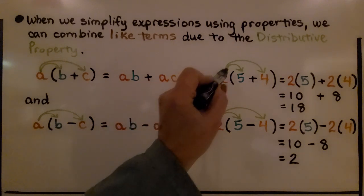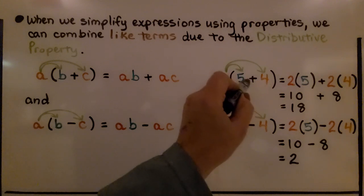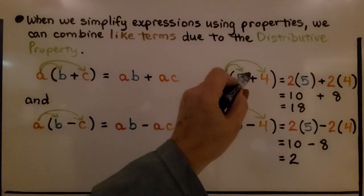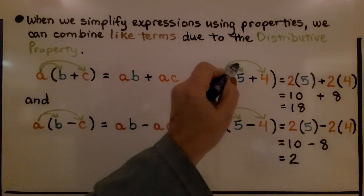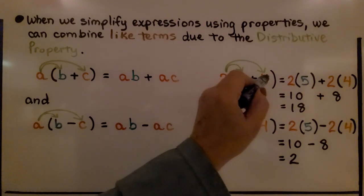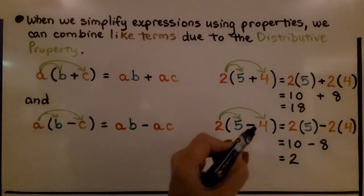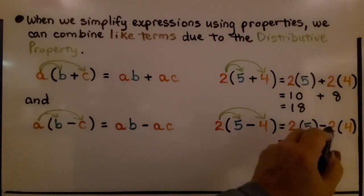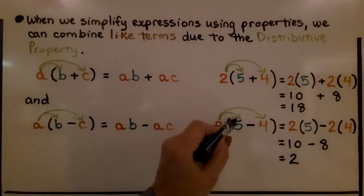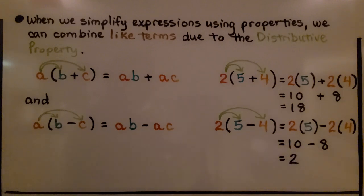So if we used actual numbers, and we had 2 times 5 plus 4, well, we know we can add this, and it would be a 9, and we would do 2 times 9. But we could also do 2 times 5, which is 10, plus 2 times 4, which is 8, and that would give us 18. If there were a minus sign here, we'd have 2 times 5 minus 2 times 4. We'd have 10 minus 8, that would be 2.